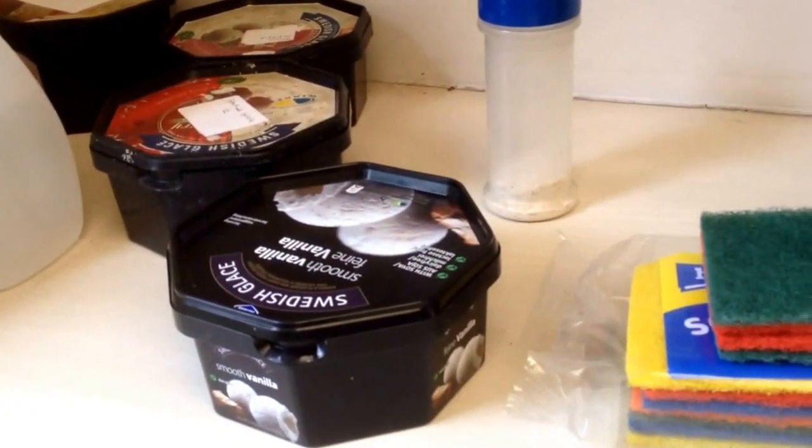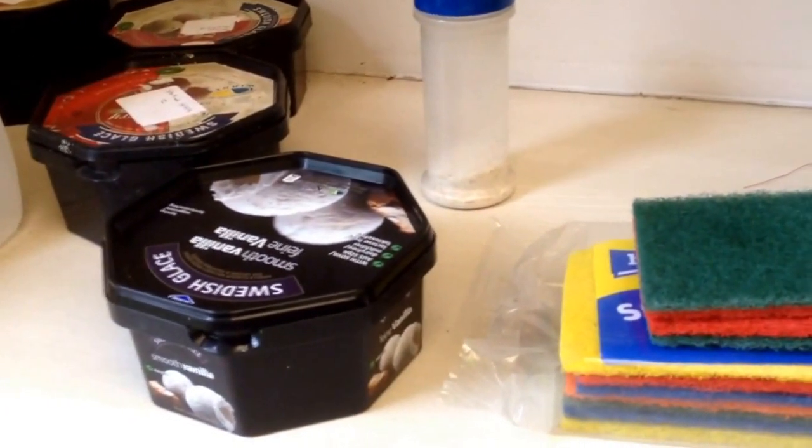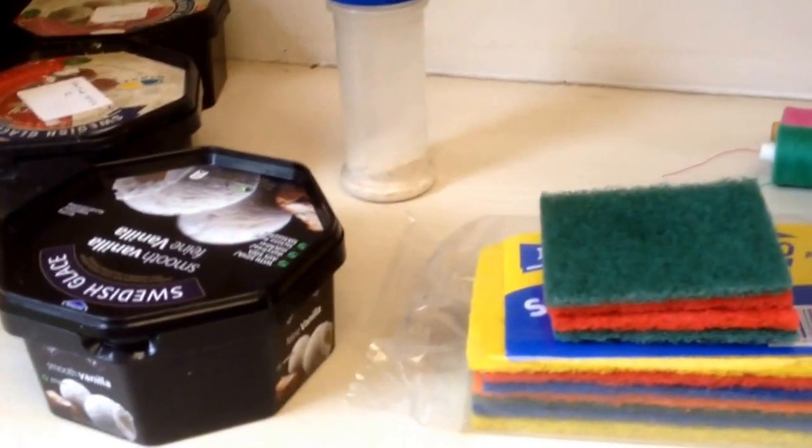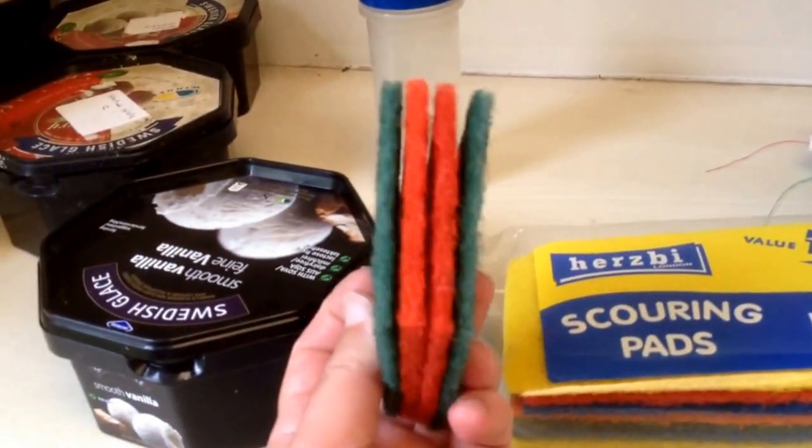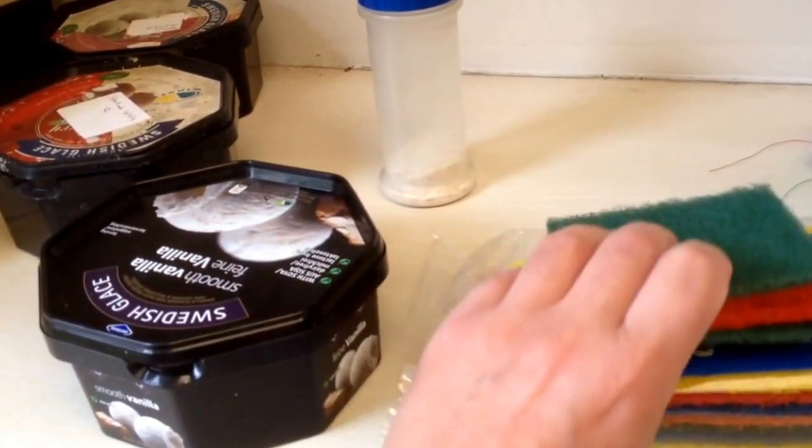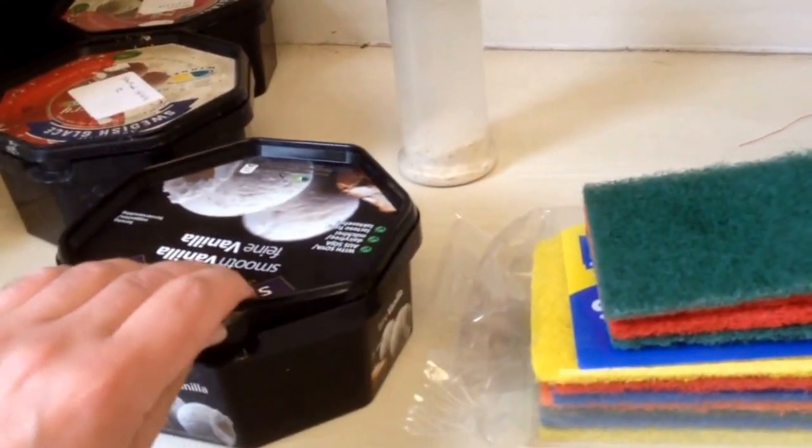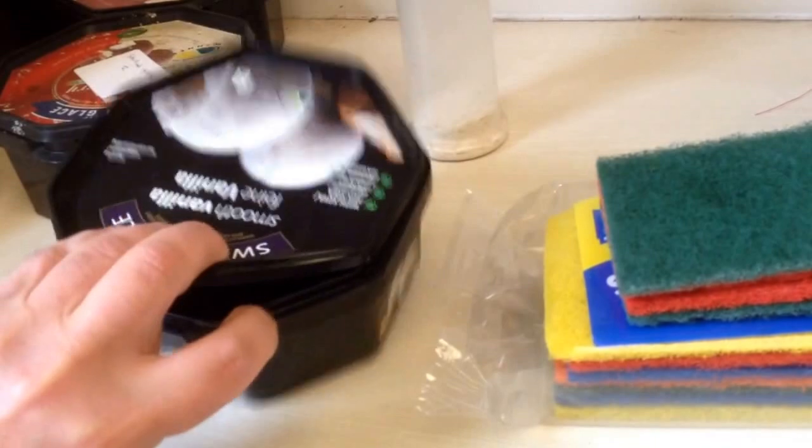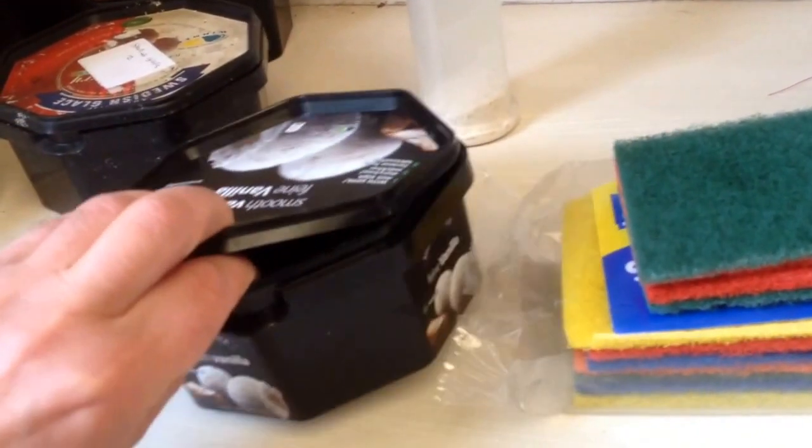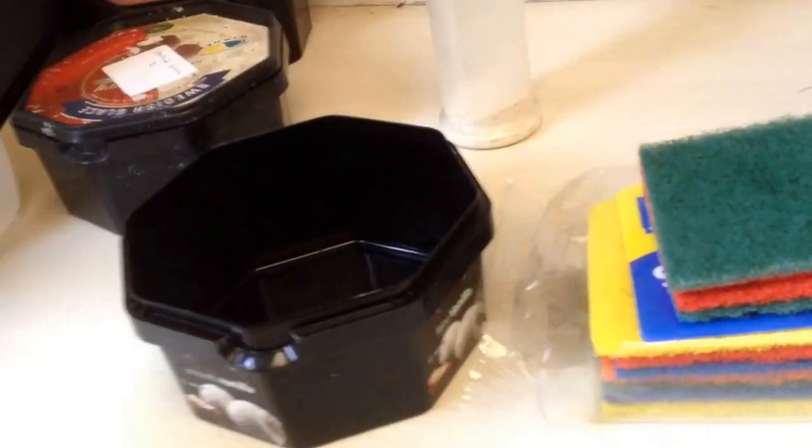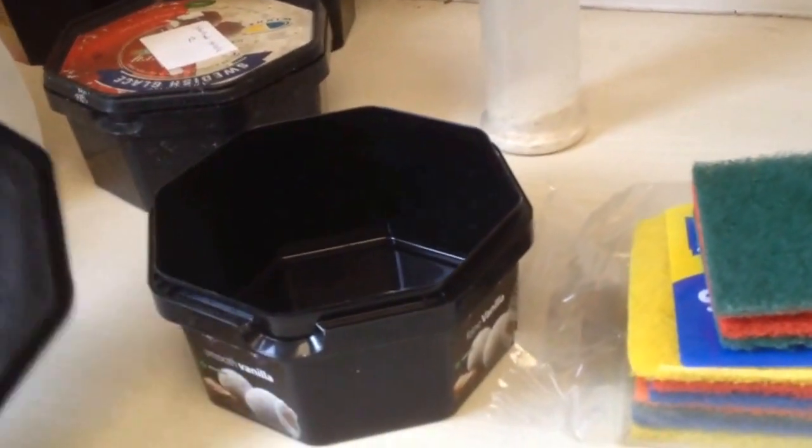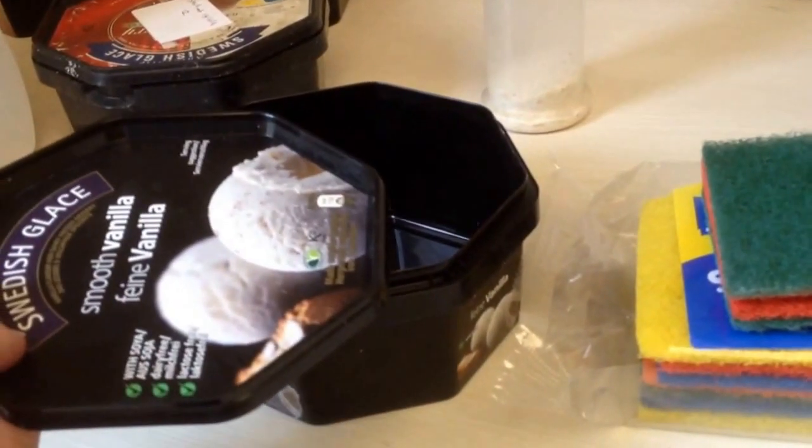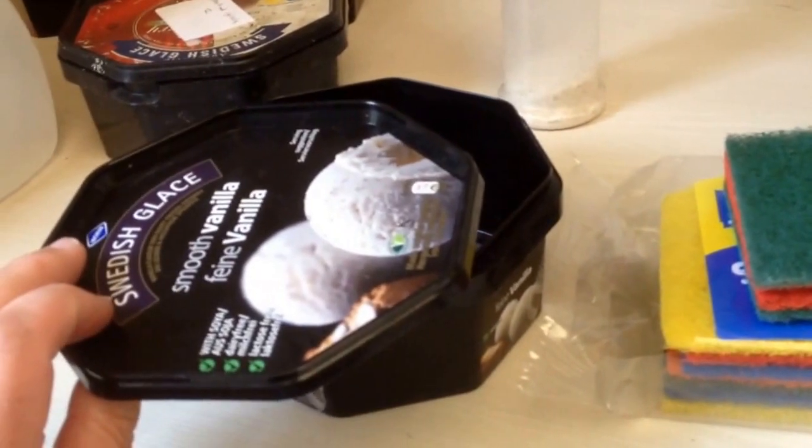The process of setting up a culture is pretty straightforward. You take some scouring pads such as these and place them into a container. In this case I'm using an old ice cream container. I will be putting some holes in the lid using a needle.